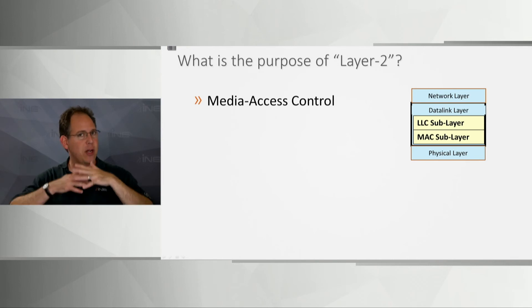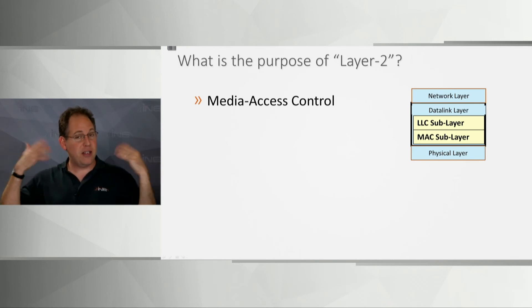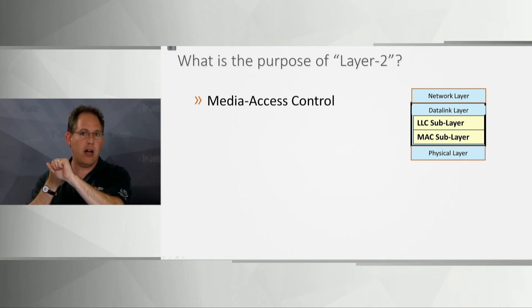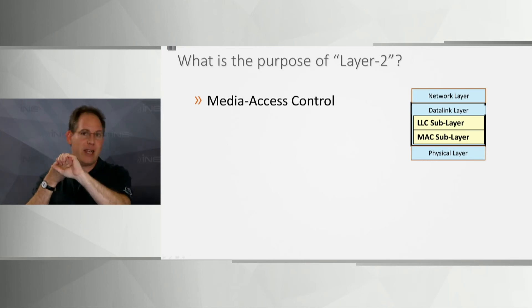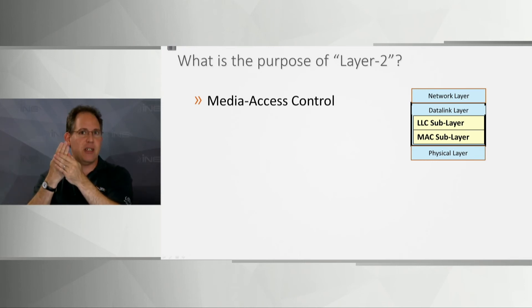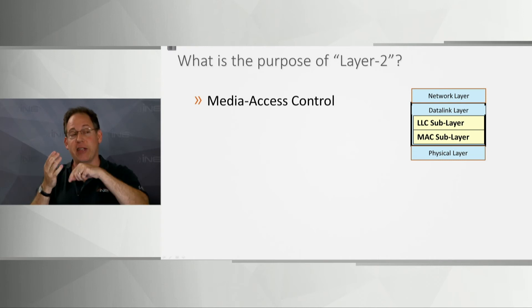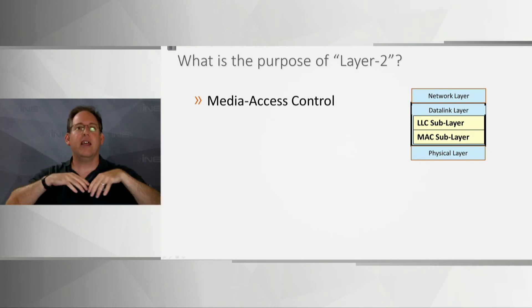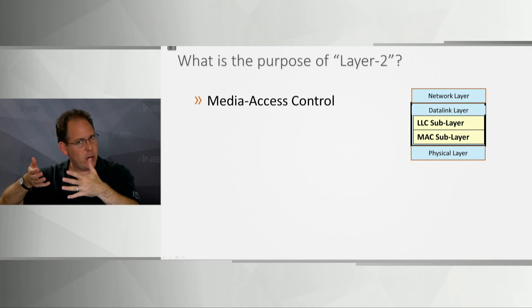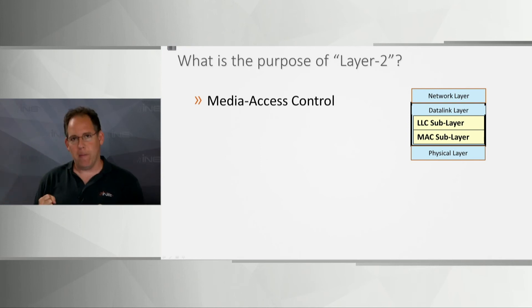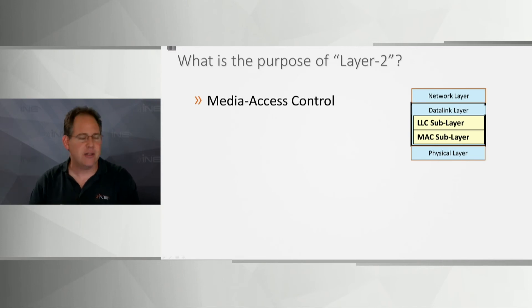If a protocol answers questions like how do you know when you can talk on the cable, how do you know when to stop talking, how do you identify that incoming data is for you, and how do you identify specifically who you're transmitting to — that is a layer 2 protocol. DSL and optical don't answer those questions; they're physical layer stuff.